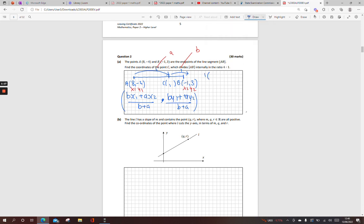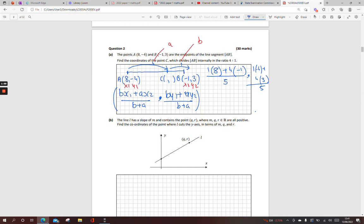So, BX1, it's 1 times X1, which is 8, plus AX2, which is my 4, times my X2, which is minus 1, over B plus A, which is 1 plus 4, which is 5. Do the same on the other side of the formula. So, BY1, which is 1 times minus 4, plus AY2, which is 4 times 3, over B plus A, which is 5. Tidy that up. I have 8 minus 4, which is 4 over 5, and minus 4 plus 12 is 8 over 5. And that's your answer.